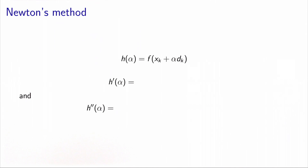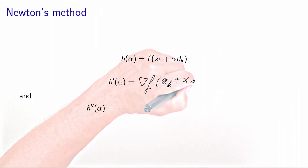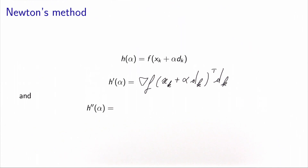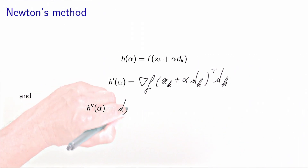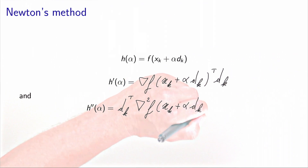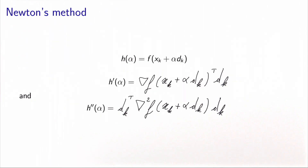One way to find a local optimum of this unidimensional function would be to calculate the derivatives and apply Newton's method. The first derivative is the directional derivative of f along dk evaluated at xk plus alpha*dk, and the second derivative is the curvature of f along dk. However, if we apply Newton's method at each iteration, we spend a lot of time calculating these derivatives. Although the problem is unidimensional, the gradient and second derivative matrix of f involve substantial computation — so this is too cumbersome.